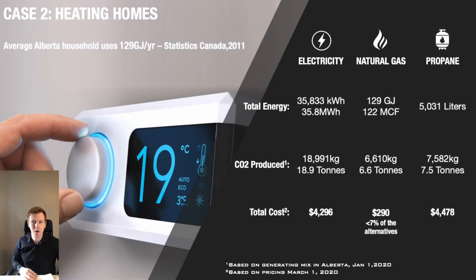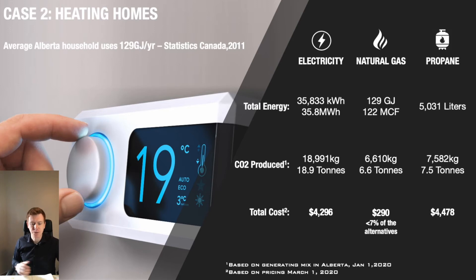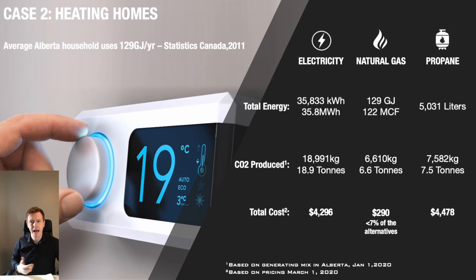Let's look at another scenario: heating our homes. Here in Canada we have a northern climate — in winter it can get very cold — and on average, the average home dwelling uses about 129 gigajoules of energy per year. Using natural gas, we're actually producing about 6.6 tons of CO2 to provide that heat and spending about $290 a year, which is rather affordable. If you look at electricity to do that same amount of energy, we'd end up producing 18.9 tons of CO2 and it would cost a whopping $4,296 — that's almost 20 times the price.